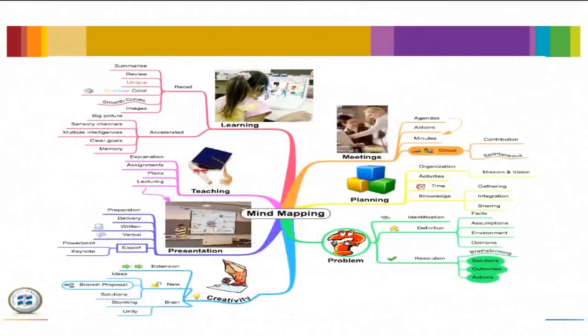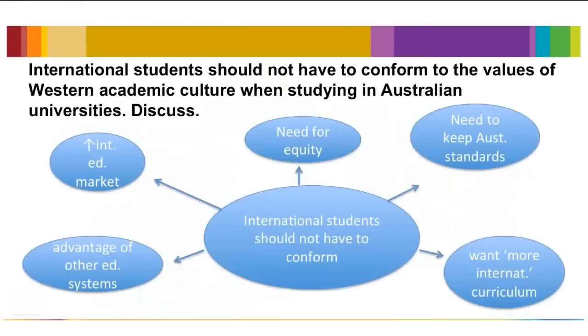A mind map can look like this very organic shape here with a central idea in the middle of the page, from which you can create links to relevant ideas or points. It's a way of building a visual image of your topic. This is an example of a mind map using the topic of international students we analyzed earlier.